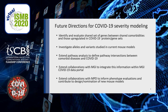For future directions, we will continue to investigate not only these eight genes across these core comorbidities, but also bring in more COVID-19 protein and gene sets to look at the intersection between the comorbidity genes and COVID-19 gene sets. We will extend this work to include other comorbidities as they're identified, drill down into alleles and variants in current mouse models, extend our pathway analysis to define pathway intersections between comorbid diseases and COVID-19, and extend our collaborations with the Mouse Genome Informatics system COVID-19 data portal and the Mouse Phenome Database for phenotypic evaluations and new mouse model design.